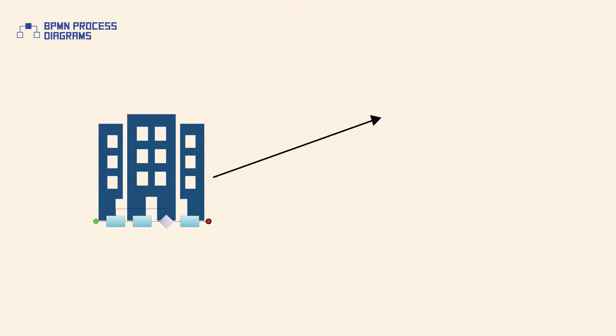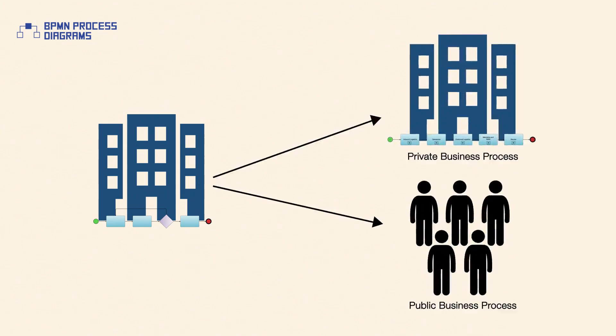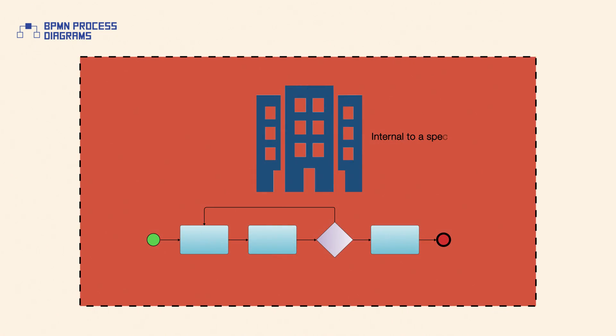There are two basic types of BPMN processes: private business processes and public business processes. Private business processes are those internal to a specific organization. These processes are generally called workflow or business process management processes.